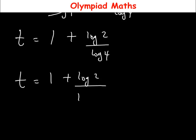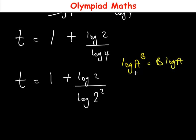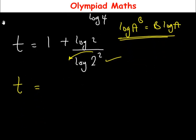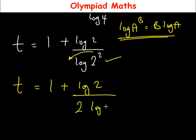We can simplify further. Log(4) can be written as log(2 squared). There is a rule of logarithm that log(a raised to power b) equals b times log(a). Applying this rule, the power 2 comes in front, so log(2 squared) becomes 2 times log(2).